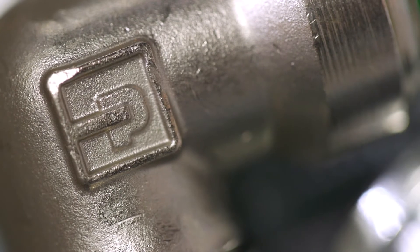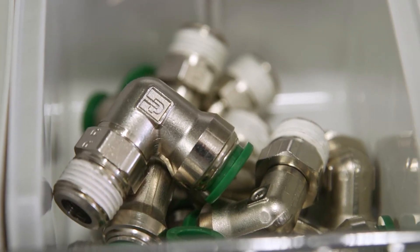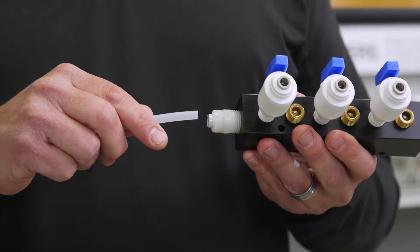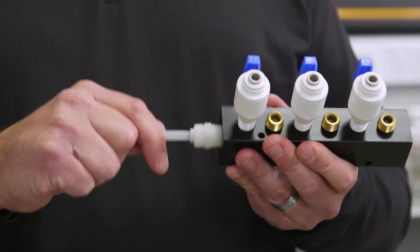It would be important for a packaging food and beverage customer to work with a supplier like Parker that can supply the full breadth of product, making sure that all the components work well together to provide an efficient system.